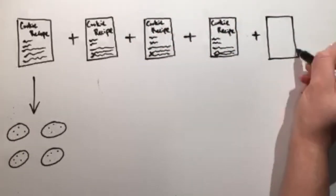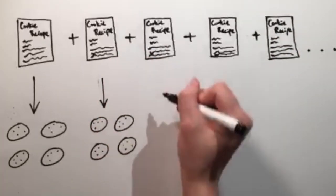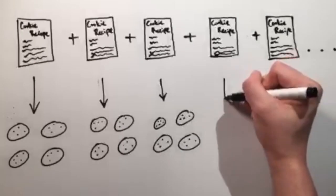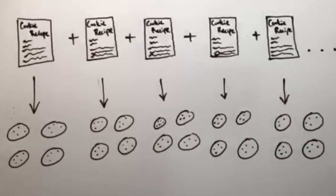The repeating gene sequences in cephalopods are like this recipe, and the specialized cells are the cookies. As the gene sequences are repeated again and again, the number of specialized cells increases.